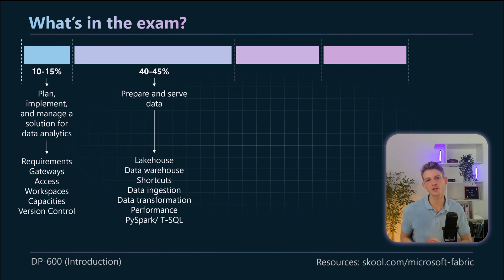Then we've got data transformation so once we've got our data within Fabric we might want to do some transformations on it. Now you can do that with T-SQL, Spark, and you will need to know at least the basics of T-SQL and Spark and also DAX in the next section as well. So there's quite a lot of languages that you need to know to kind of an intermediate level I would say for this exam.